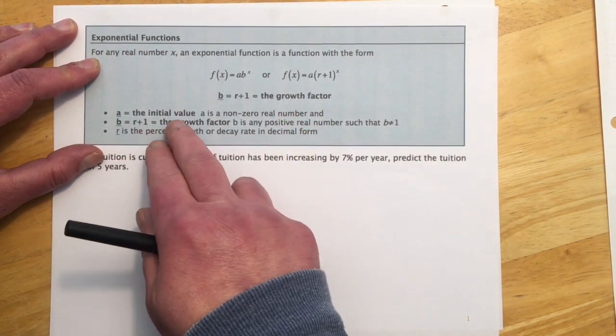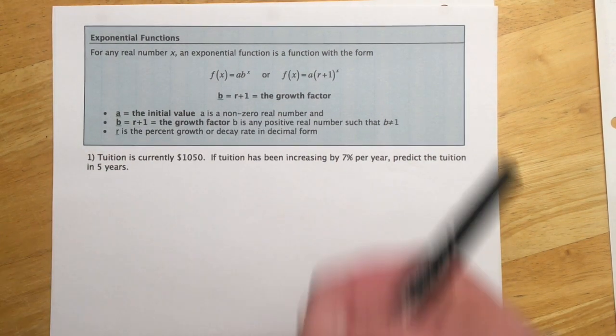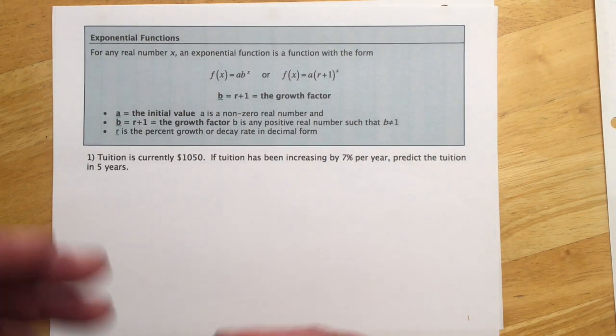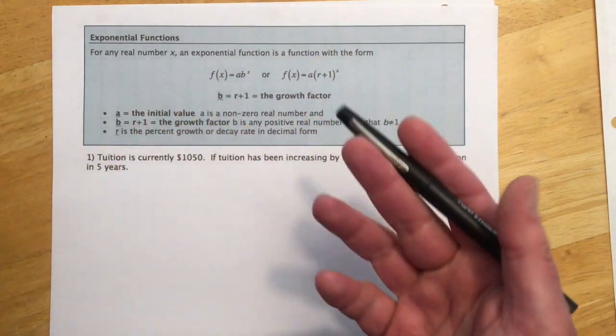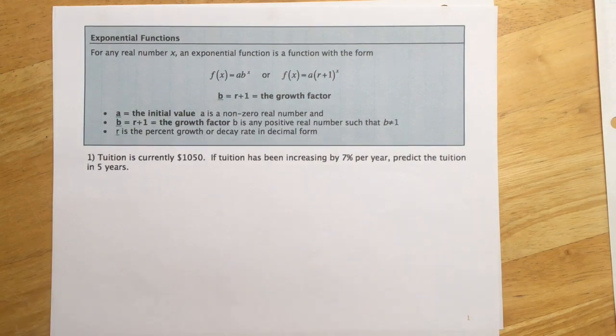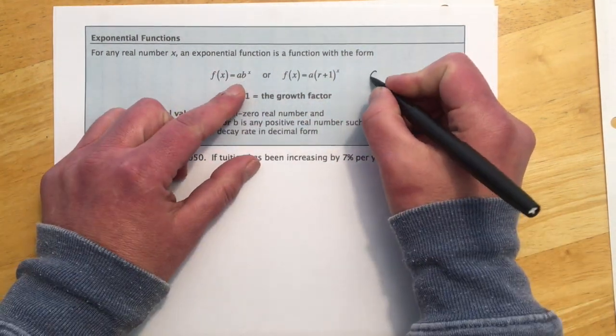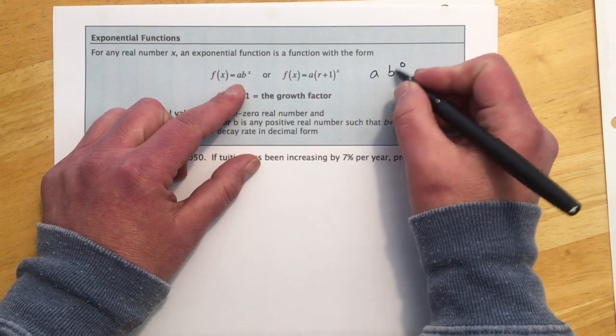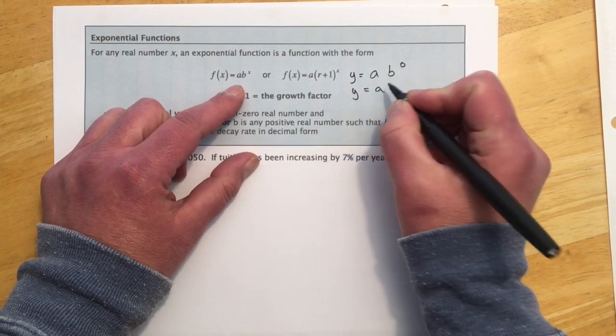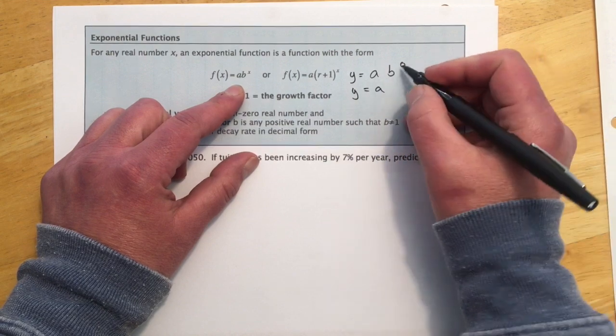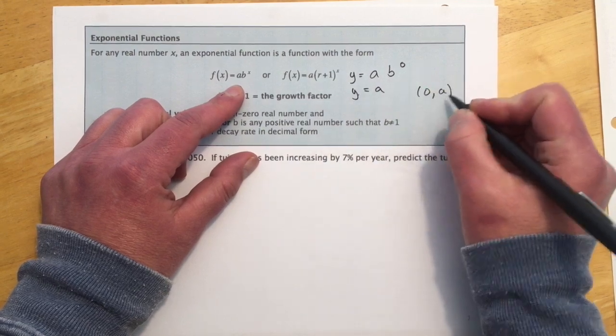The a is important. The a is the initial value, so a is however much we're starting with. So if it was money, it's how much I put in the account. If it was a population of bacteria increasing at 3% per day, that initial population that you start with, that's a. And the reason is that if x is 0 in either of these, a times b^0, b^0 is 1, so that means y equals a. So when the input is 0, the output y is this a, so that's our initial value.